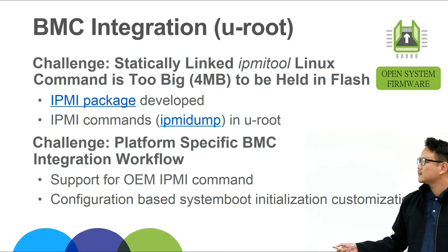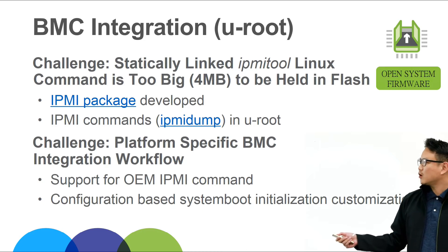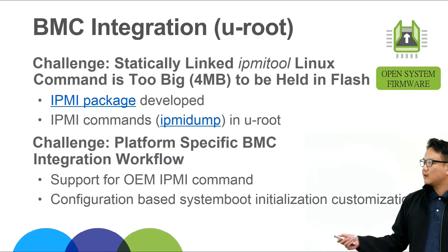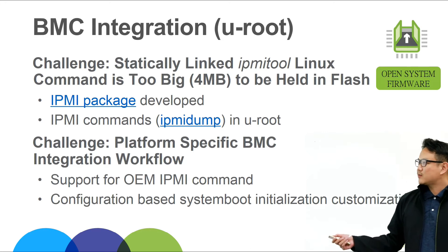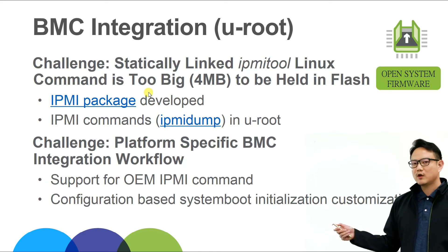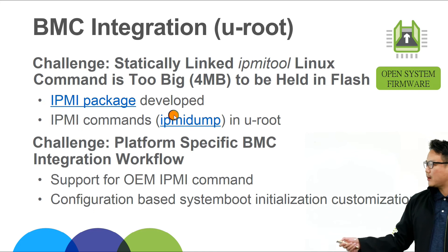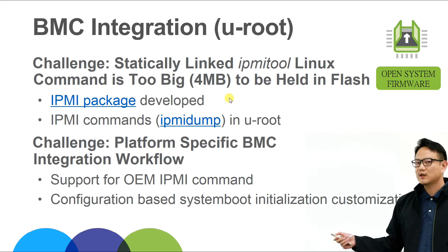For the BMC integration in the U-root part, the challenge was that at first we tried to add a statically linked IPMI binary to U-root, but the size is too big — 4 megabytes. In Monolake, 4 megabytes already takes half of the flash size. And also it's more ideal that we can upstream to U-root. So with Facebook, we developed an IPMI package written in Go, so you can make IPMI commands in Go directly. And also we added a small IPMI dump utility — a command line utility in U-root — so you can run the command to display IPMI information.